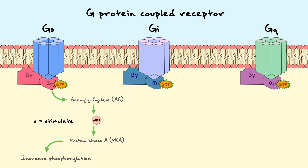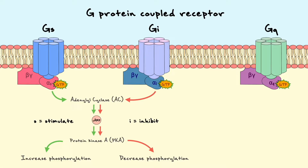This pathway is in direct opposition with the αI pathway, which stands for inhibitory. The αI pathway is essentially the same in its shape, but the result from αI binding to adenylyl cyclase is inhibition. As a result, the levels of cAMP, active PKA, and overall phosphorylation are decreased.